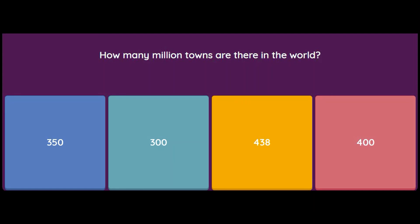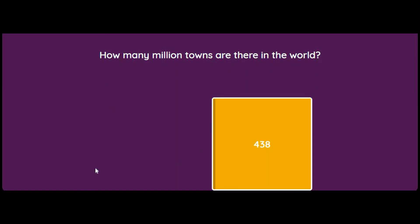How many million towns are there in the world — towns with a population of one million or more? Options: 350, 300, 438, or 400. The answer is 438 towns in the world have a million-plus population. Note that this figure is not in the book and should be remembered separately.